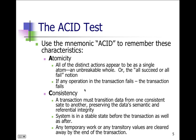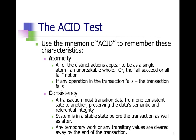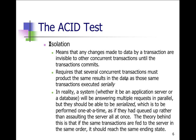Consistency: a transaction must transition data from one consistent state to another, preserving data semantics and referential integrity between the different states. The system is in a stable state before the transaction as well as after. What we don't want is some system going through and performing something, then finding that the before doesn't match the after and we can't reconcile — like what happens when checkbooks get out of balance. Any temporary work or transitory values are cleared away at the end of the transaction, retaining a consistent state from transaction to transaction.